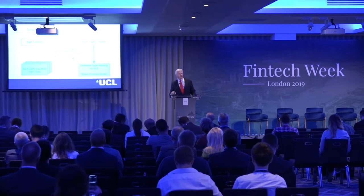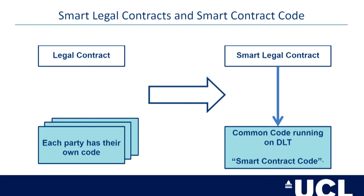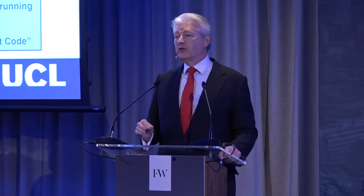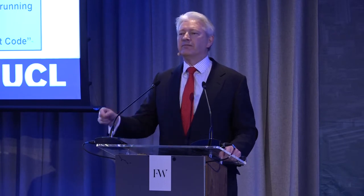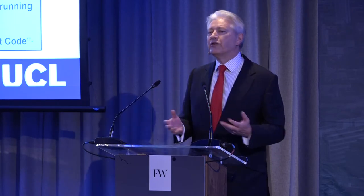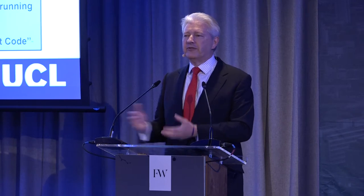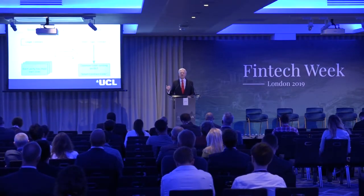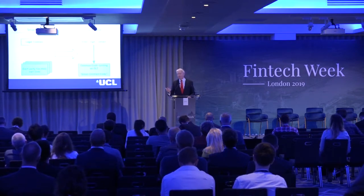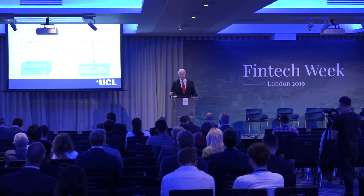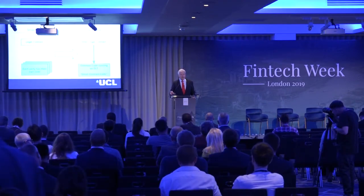We use the terms 'smart legal contract' and 'smart contract code' to differentiate between different aspects. On the left is traditional contracting: for a derivatives contract, there will be a legal contract written in natural language, and parts of it are often automated but with different code at different counterparties. Moving to smart contracts on distributed ledgers, we talk about the smart legal contract — automatable and legally enforceable — with common code running on a distributed ledger underneath, which is the smart contract code.